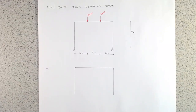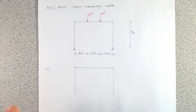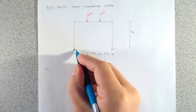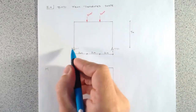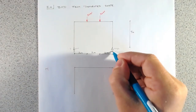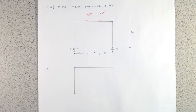This approach is very useful for indeterminate structures, where we have more unknowns than equations of static equilibrium. Here we have two pins at the base, and at each pin there is potentially a vertical and horizontal force component, giving us four unknowns but only three equations of equilibrium.